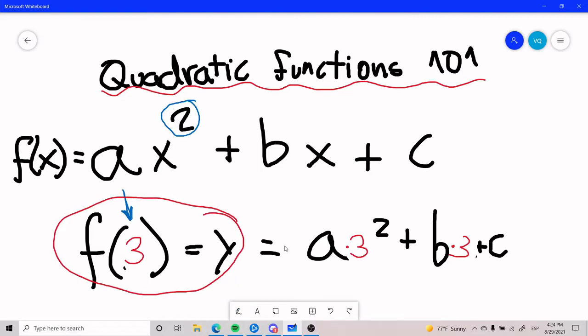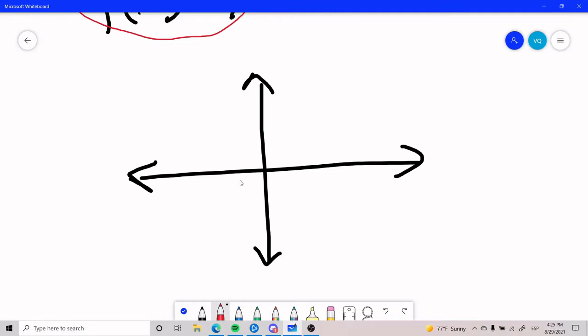Now, moving on to what a does, what b does, and what c does. So the value of a has two primary functions. The first one is it dictates whether the function is facing upward or if it is facing downward. For when it is facing downward, we're going to have an a that is negative. And when it is facing upward, we're going to have an a that is positive.